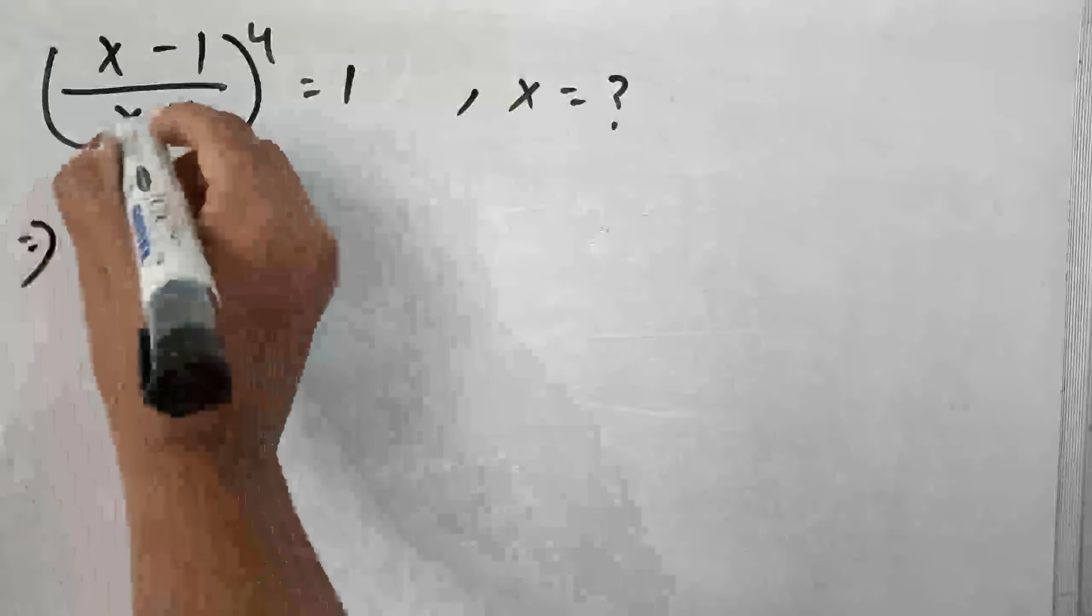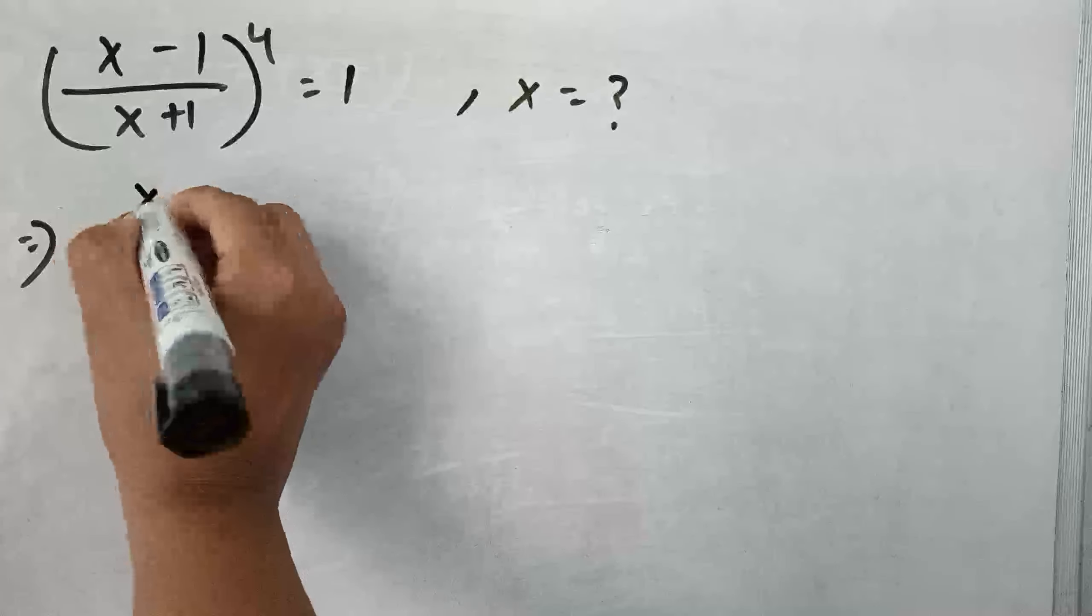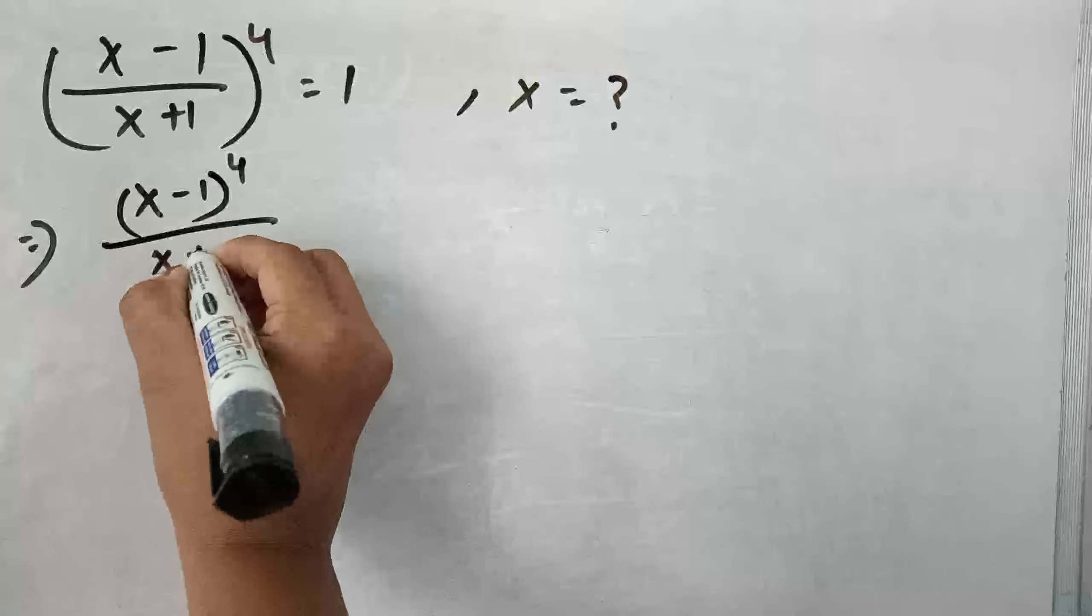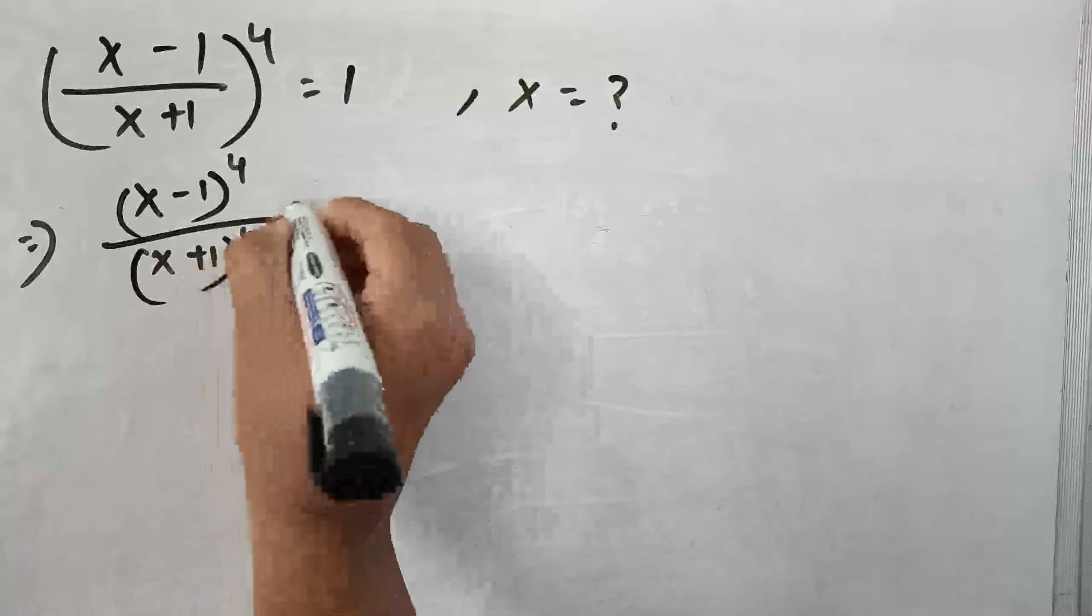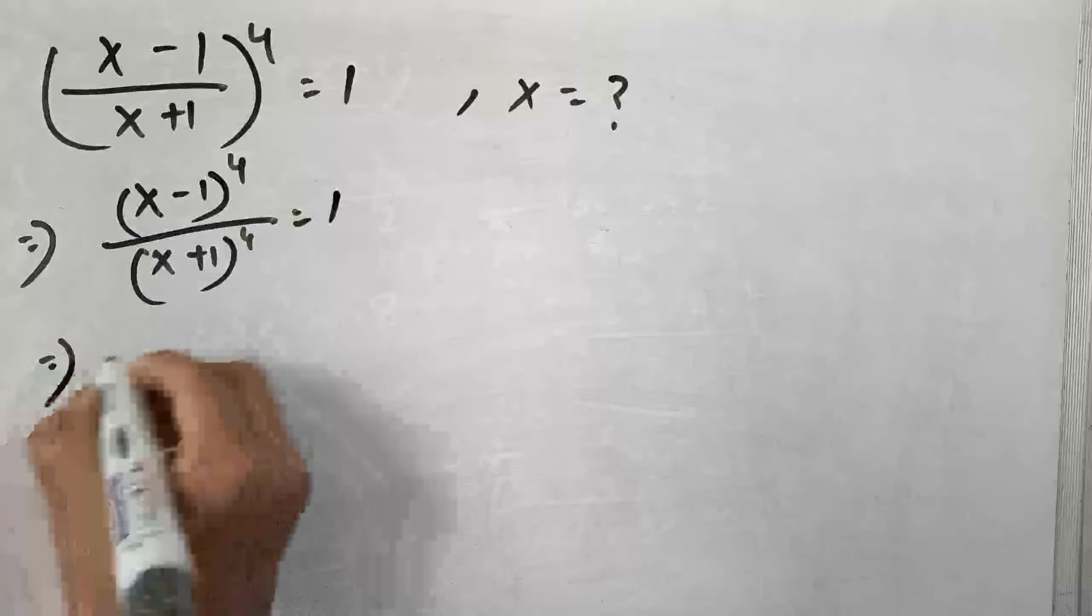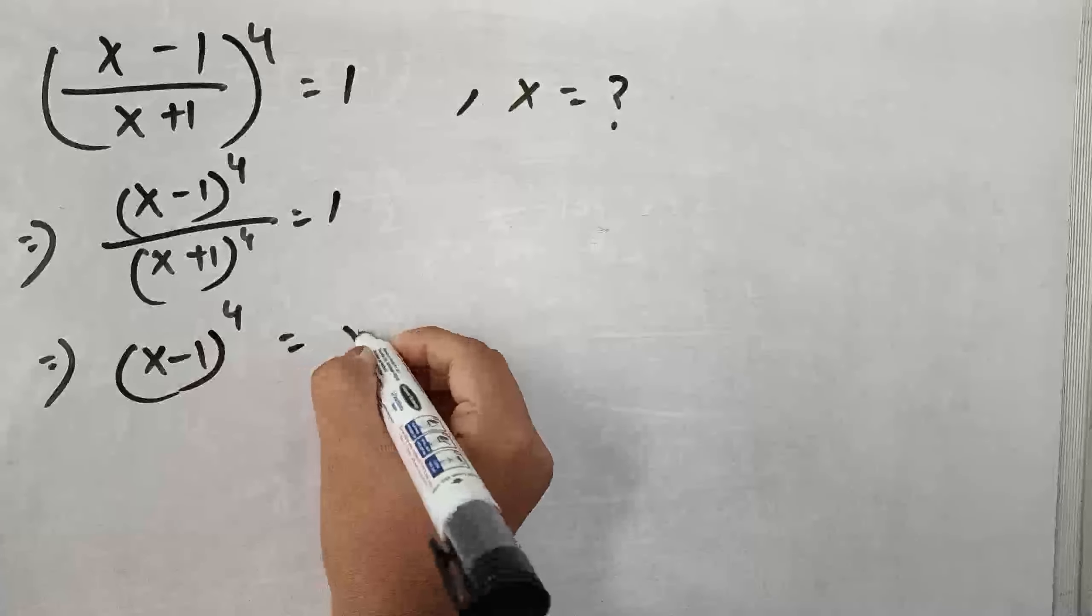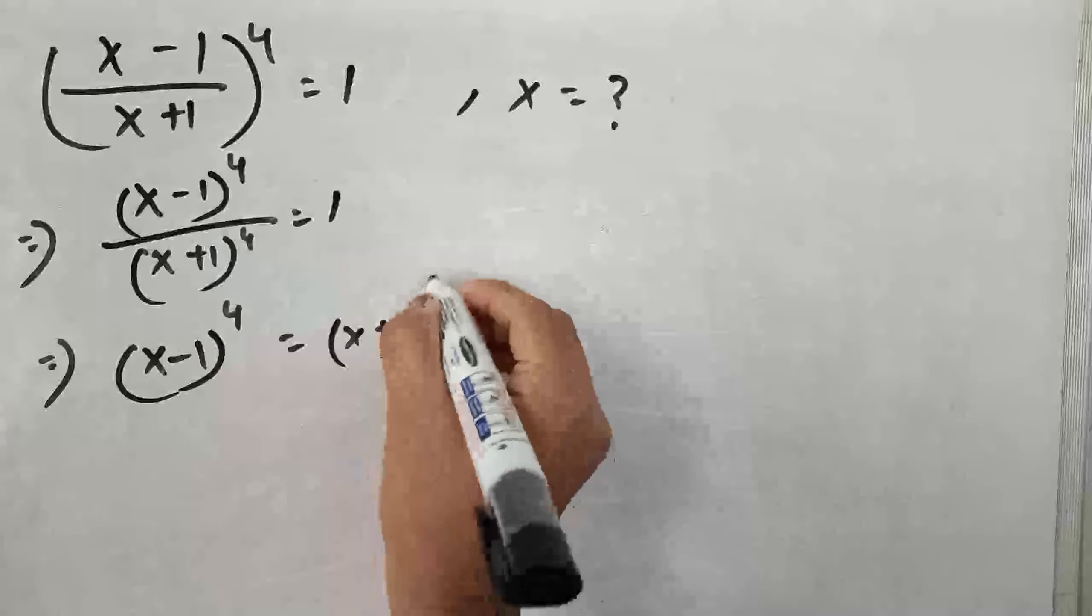So, just look we can write this equation in this way x minus 1 to the power 4 by x plus 1 to the power 4 equals to 1 that means we can write x minus 1 to the power 4 equals to x plus 1 to the power 4.